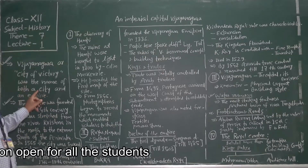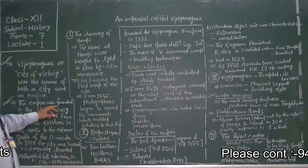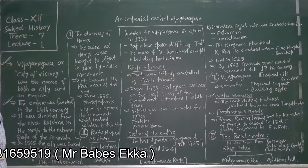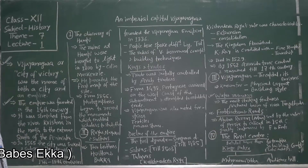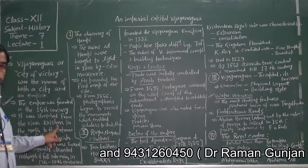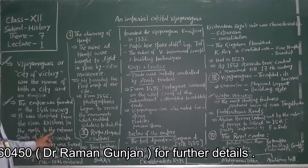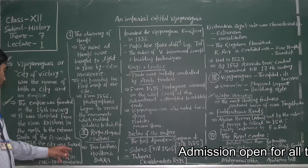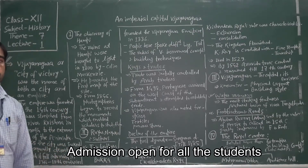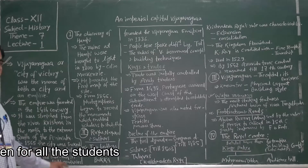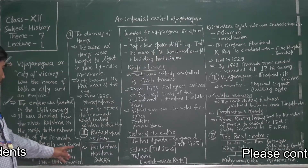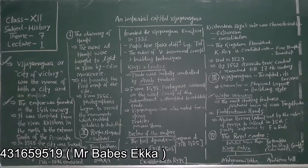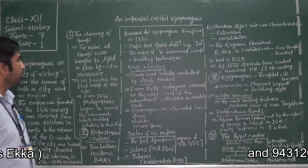The empire was founded in the 14th century — in 1336. It stretched from the river Krishna in the north to the extreme south of the peninsula. In 1565, the city was sacked and subsequently deserted. Although it fell into ruin in the 17th to 18th centuries.